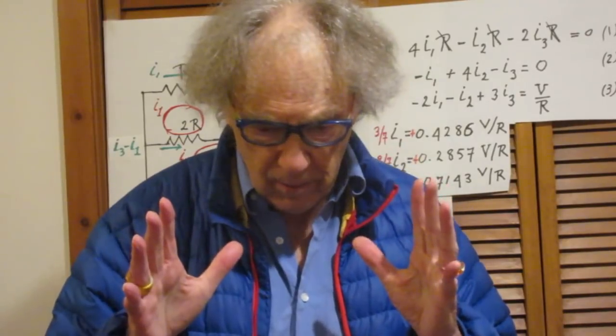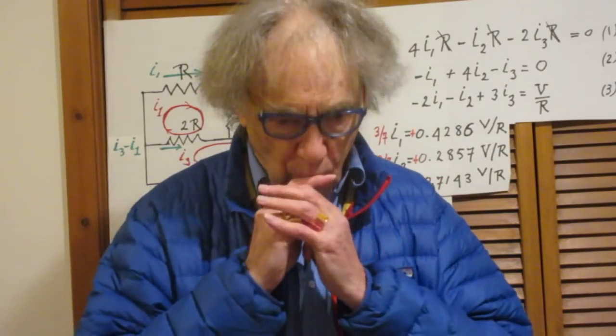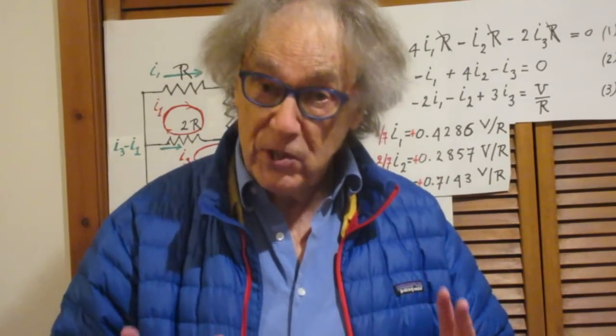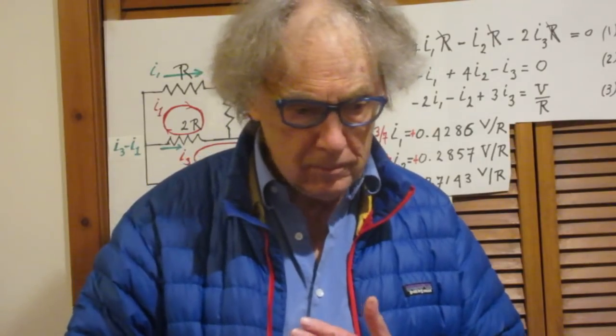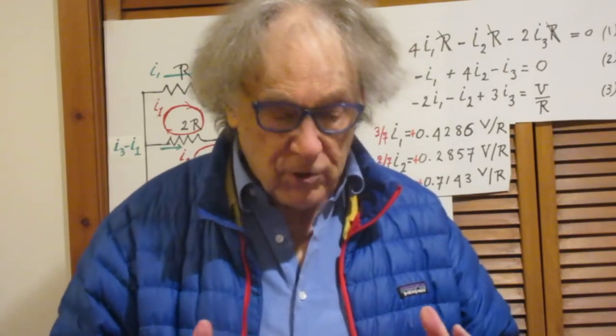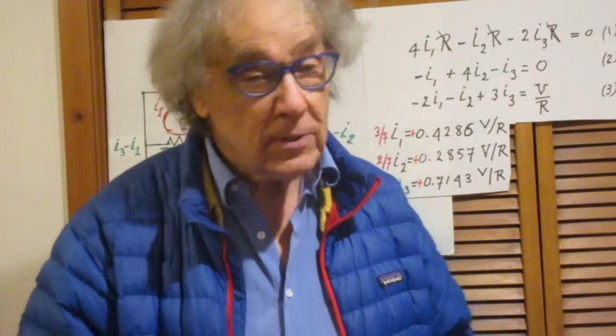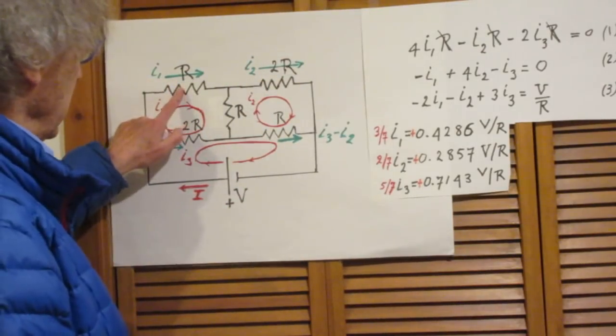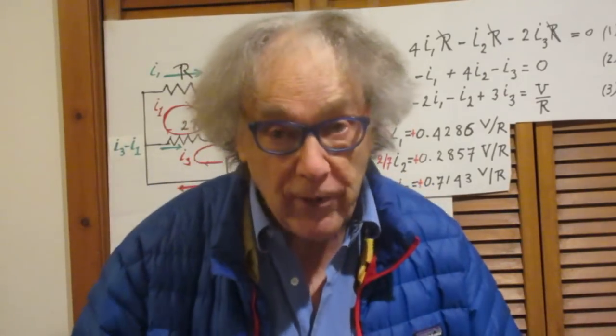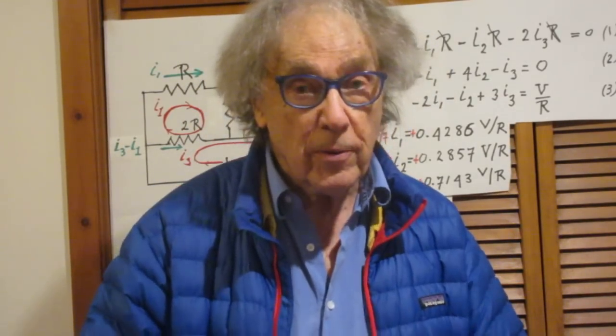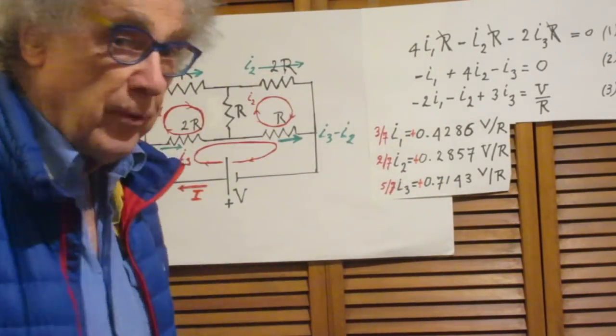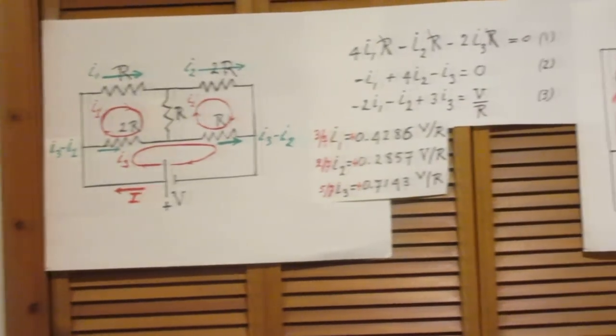So now I have to make an important admission. The fact that I got the right answer with this super method, in a way, was a stroke of luck. It was a stroke of luck because it so happened that this resistor is the same as this one, and this one is the same as that one. But I could not and should not have a priori assumed that the current through here is the same as the current through there. That was a wrong assumption.